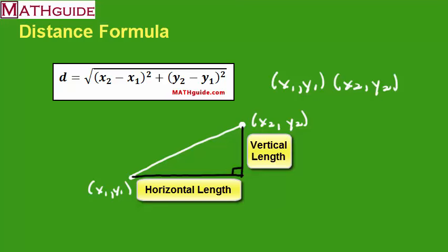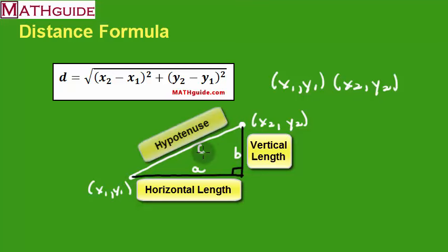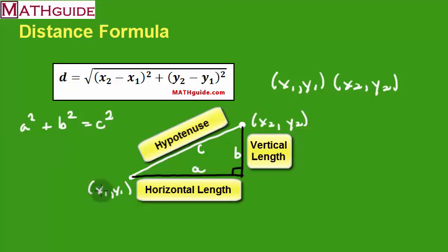If you've forgotten what the Pythagorean theorem says, it works with right triangles. If you have a horizontal distance A and a vertical distance B, you can figure out the diagonal distance C, called the hypotenuse, because it's opposite the right angle and it's the longest side of the right triangle. Pythagoras says if you square the legs and find their sum, it's equal to the square of the hypotenuse — A squared plus B squared equals C squared. Many students know this and are exposed to it in geometry.